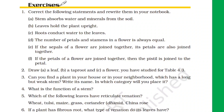Next: if the sepals of a flower are joined together, its petals are also joined together. The corrected answer is: if the sepals of a flower are joined together, its petals are separate and not joined together.